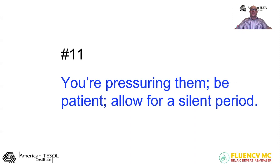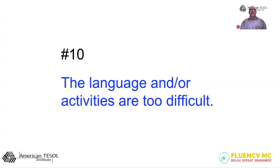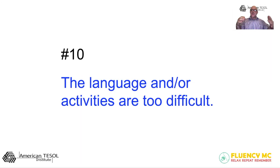Number 10: the language and/or activities are too difficult. Or maybe they're not just too difficult — it could be that they help students at their level of comprehension but not at their level of production. For example, if they're reading something at or above their reading level and need to figure out word meanings and sentence structure, you're using their energies for that. That's not going to be something that gets them speaking.